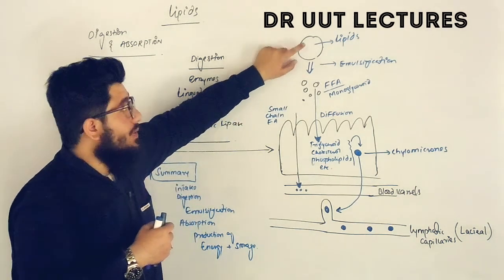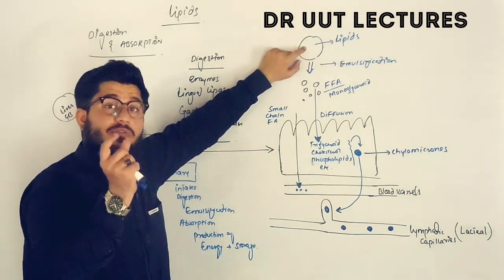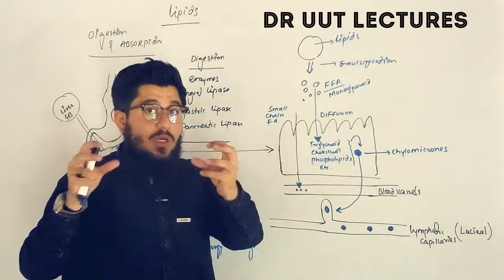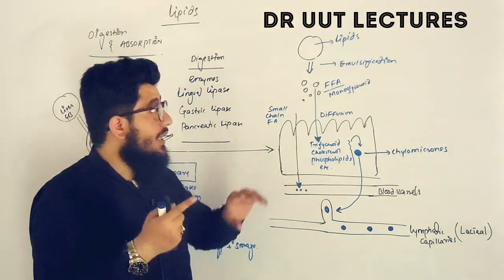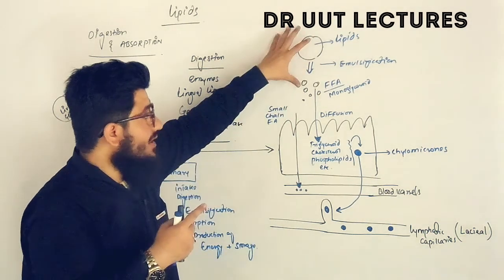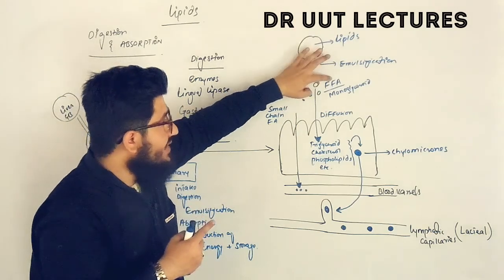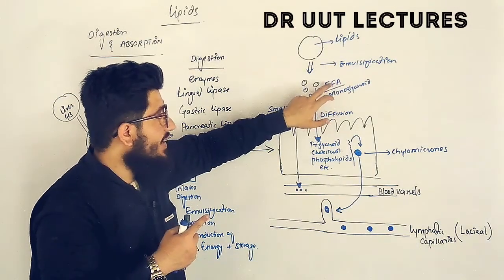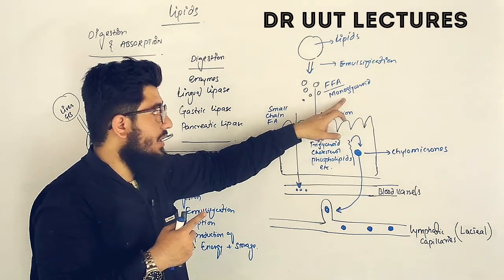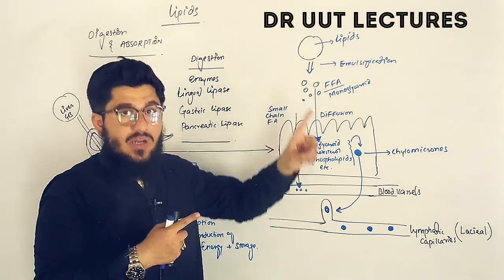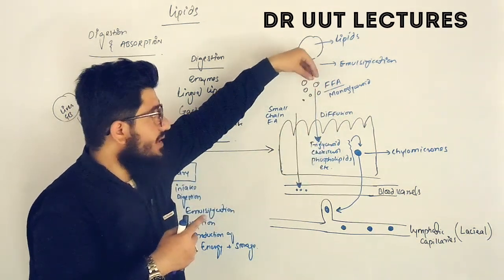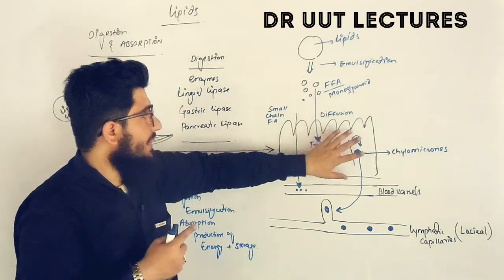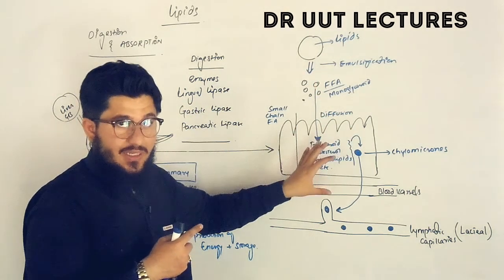Lipids are actually made up of fatty acids and alcohol. When fatty acids and alcohol combine together, they form a lipid. When we break this lipid down, fatty acids and alcohol are produced again. Here, the fatty acids are called free fatty acids and the alcohol component is known as monoglyceride. These free fatty acids and monoglycerides are then diffused into the enterocytes of the small intestine.